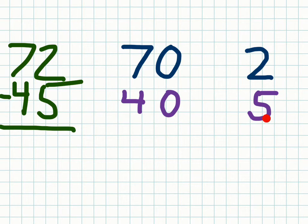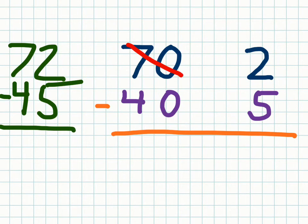As we do the subtraction, I'll put my subtraction sign here on the line. Now we're going to trade some numbers because we can't subtract 5 from 2. I'm going to trade one of these tens and move it to the ones, so 70 becomes 60.